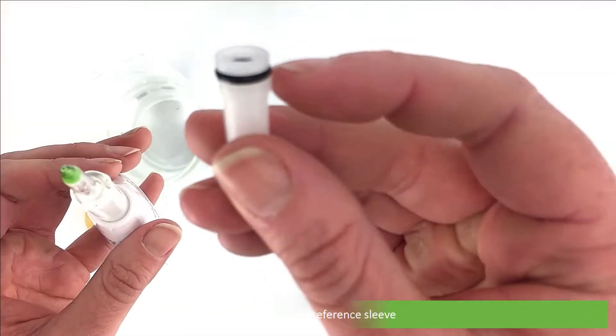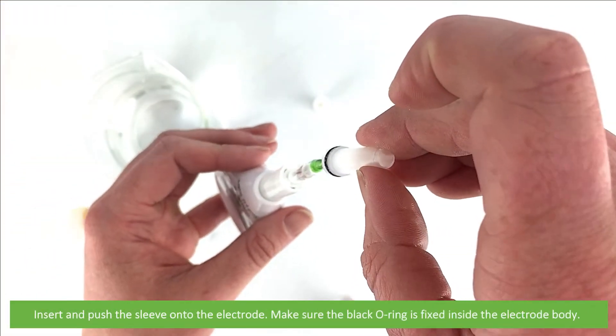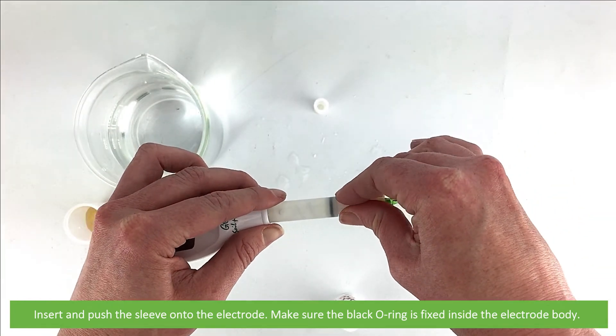Then replace the reference sleeve. Insert and push the sleeve into the electrode. Make sure the black O-ring is fixed inside the electrode body.